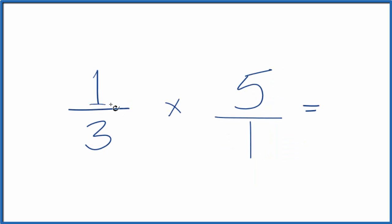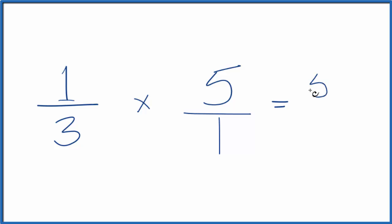Because now we can just take the numerators and multiply those. One times five, that's five, and then the denominators. Three times one is three.